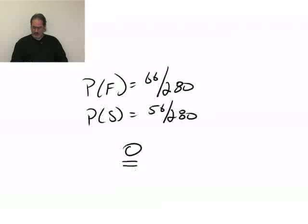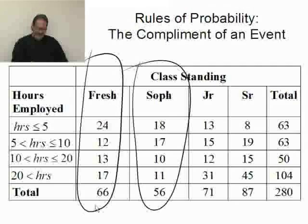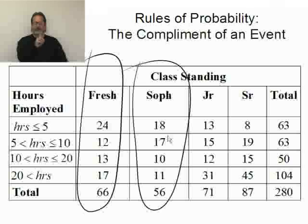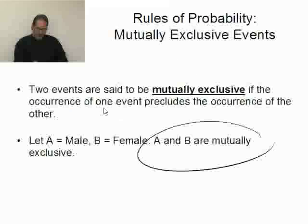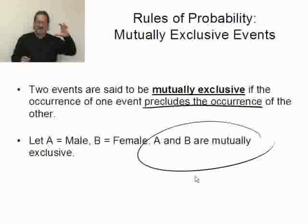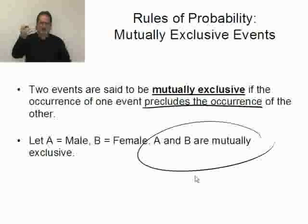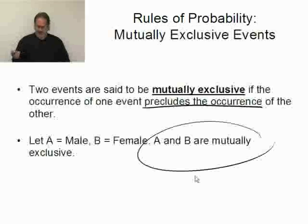Because they're mutually exclusive, once I say I observe a freshman, then everything that can happen has to be in the freshman column — none of the sophomores are. Look at the definition: one event precludes the other's occurrence. So if freshmen happen, the number of ways sophomore can happen is in fact zero — zero over 280 is going to be zero.